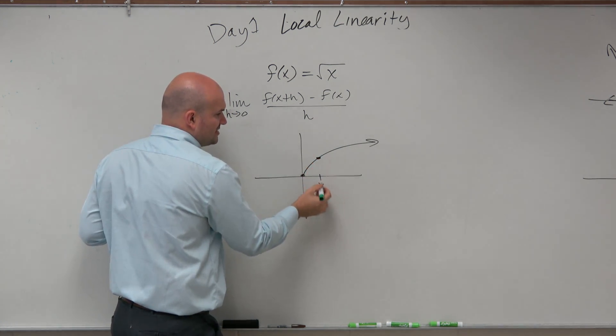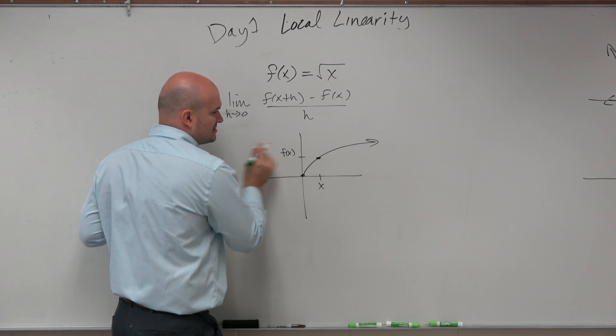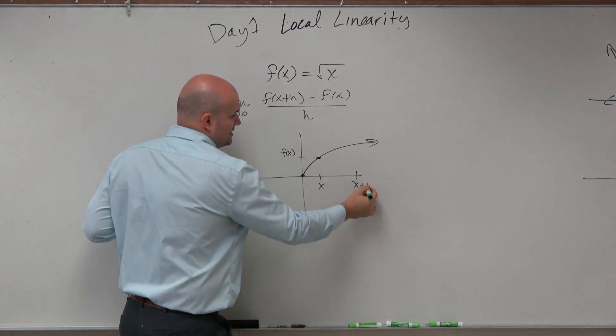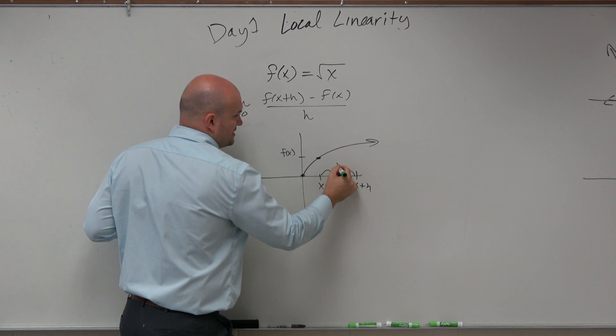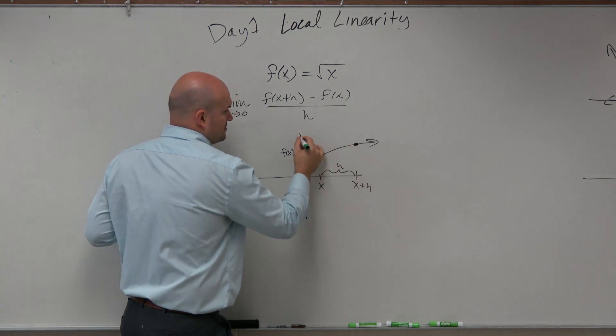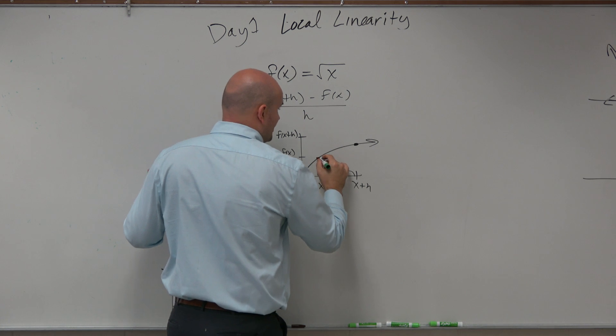Here's a point. Here's x. That's f of x, right? Here is x plus h, meaning the distance from here to here is h. So this point is f of x plus h.